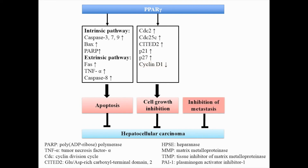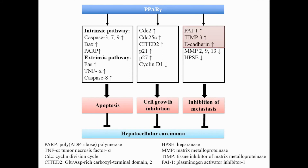Inhibition of metastasis is induced through upregulation of PAI1, TIMP3, and E-cadherin, or downregulation of MMP-2, MMP-9, MMP-13, and HPSE. A better understanding of the molecular regulation of anti-cancer effects in PPAR gamma-mediated signaling may contribute to the development of novel combination therapy for future treatment of hepatocellular carcinoma.